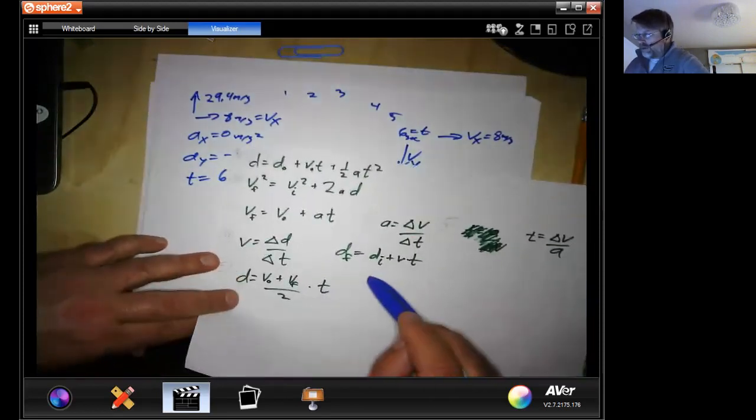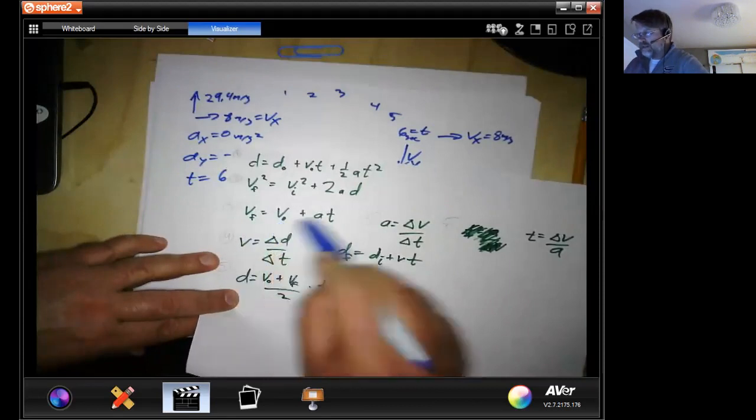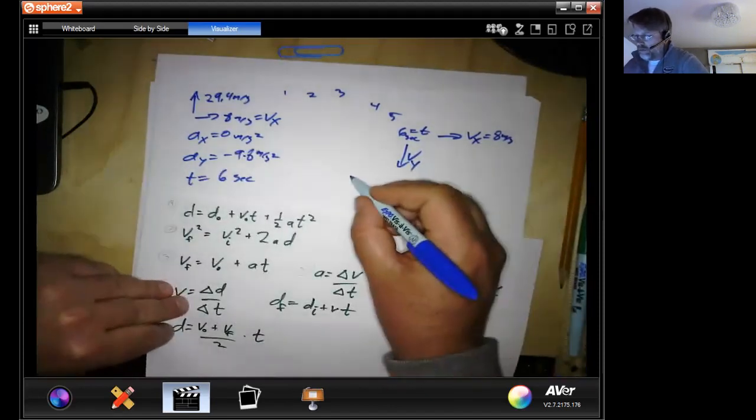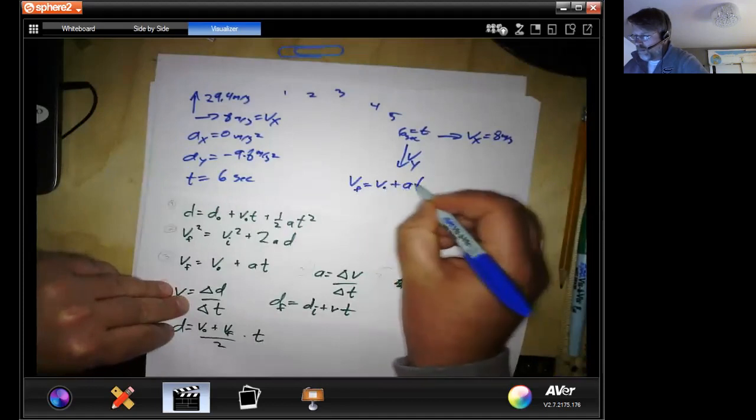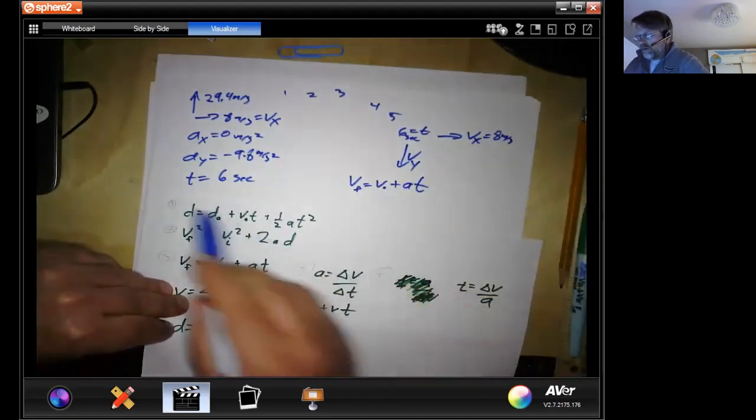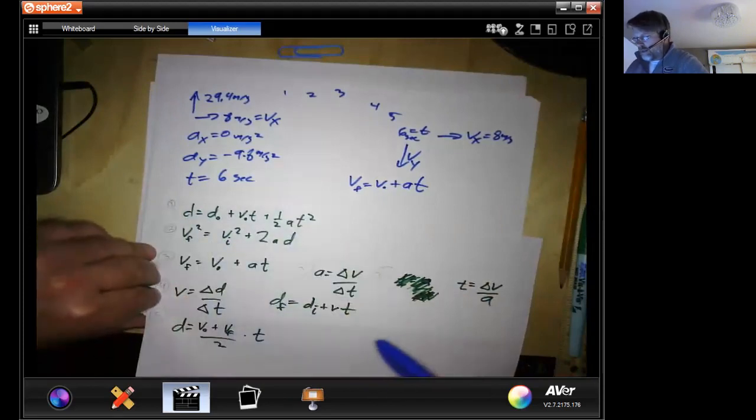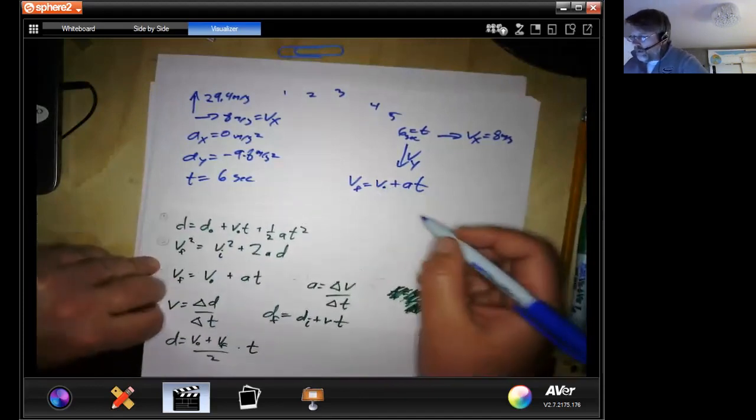And the answer to that, we want a velocity, we have a velocity, we have acceleration in the y, and we have time. So that's the equation we're going to use. We don't have distances here. So anything with a distance was not an option here. So that only left one real possibility.